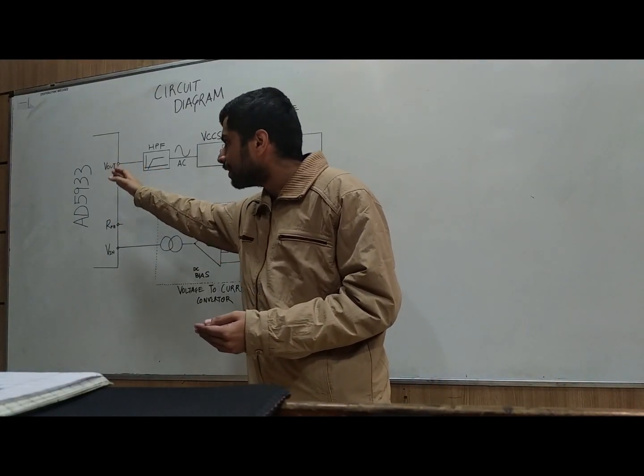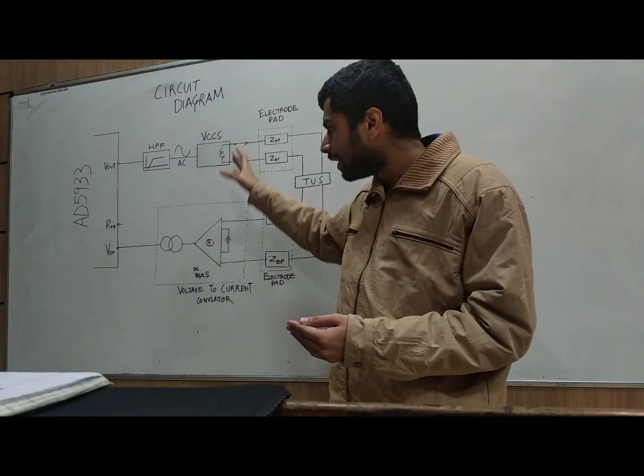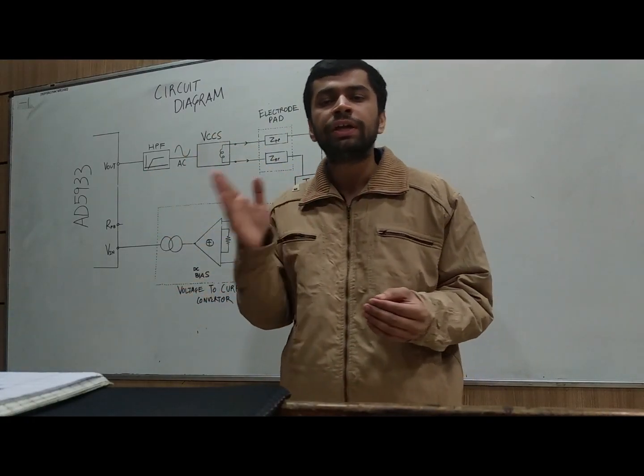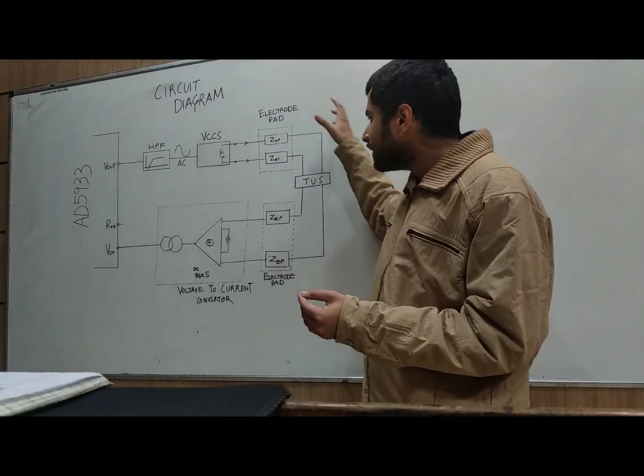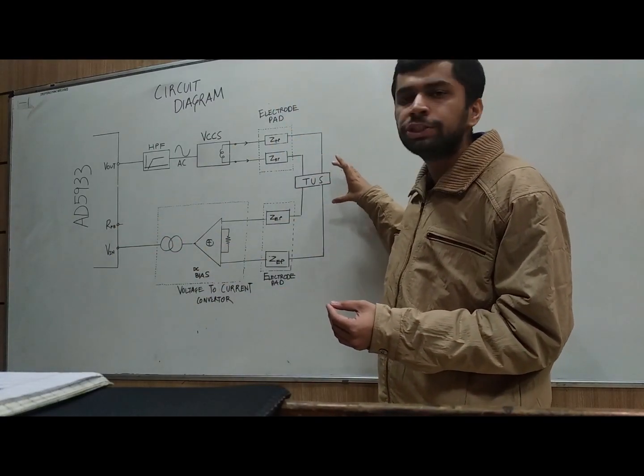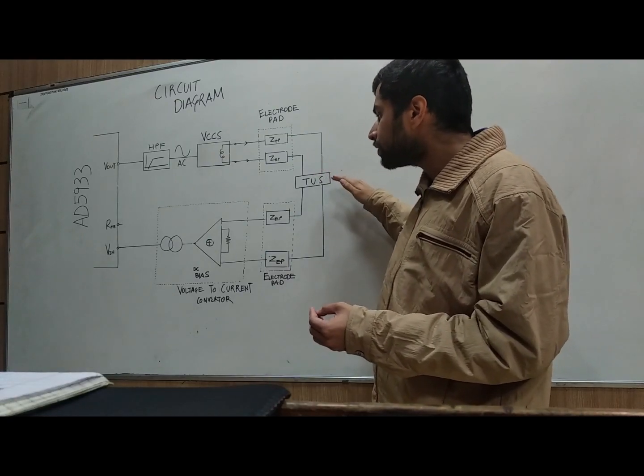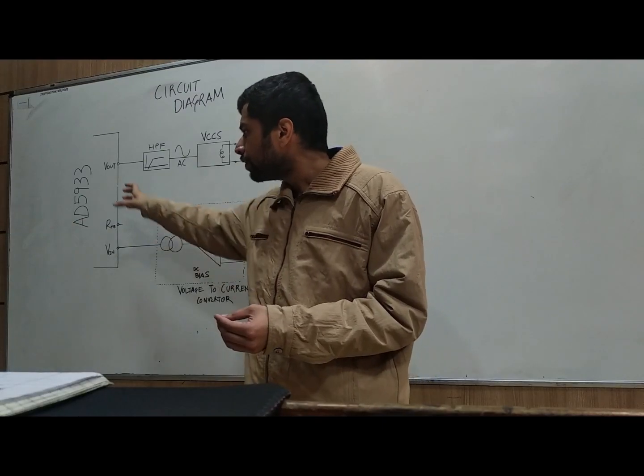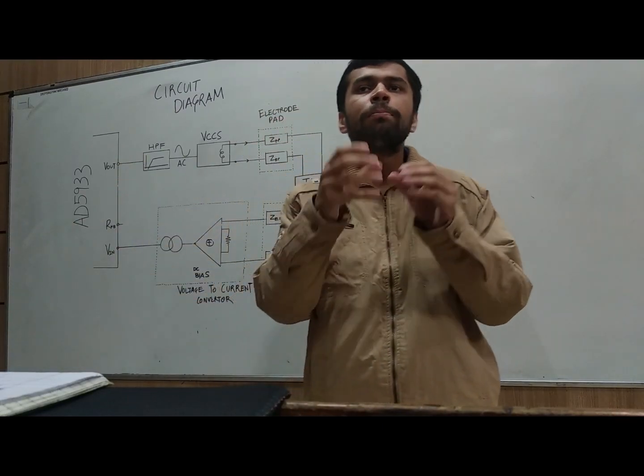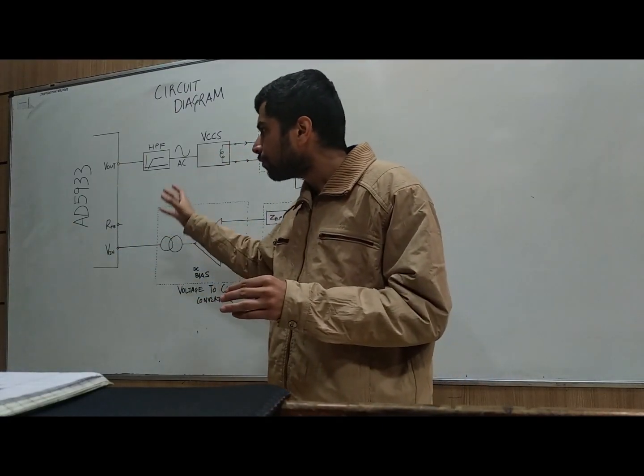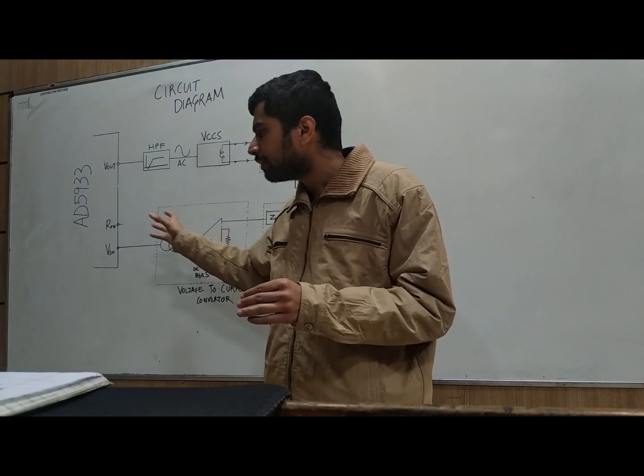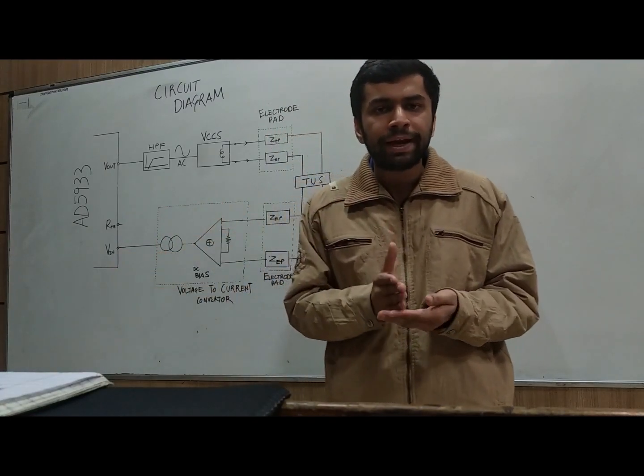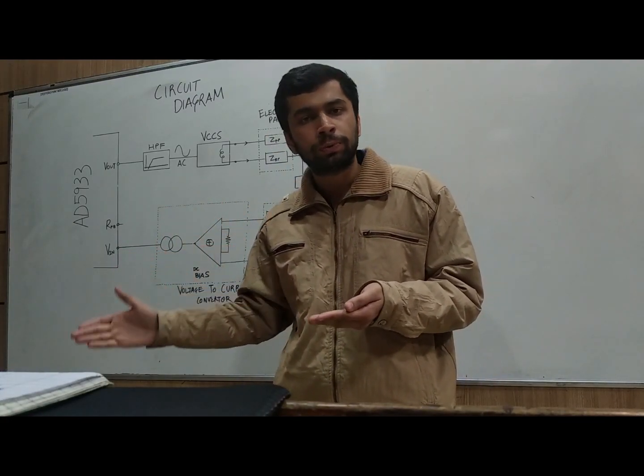AD5933 gives an excitation signal to the analog front end which is used for voltage to current conversion to gather the current difference from tissue under study. The response signal from tissue under study is given back to voltage to current converter system and further to AD5933. From the response signal, AD5933 gives the real and imaginary values of the impedance at each sweeping frequency.